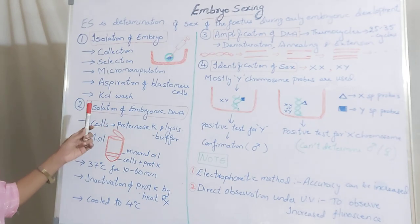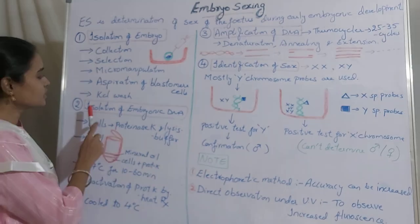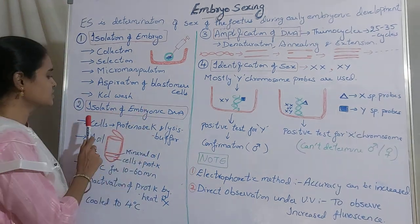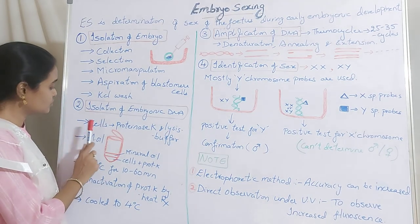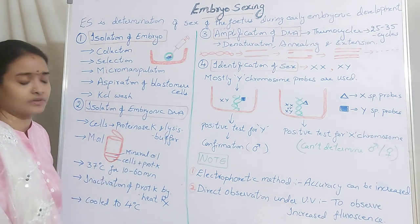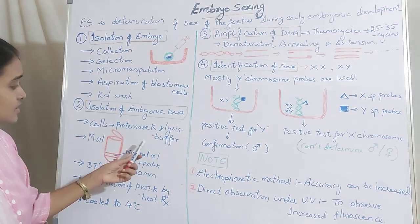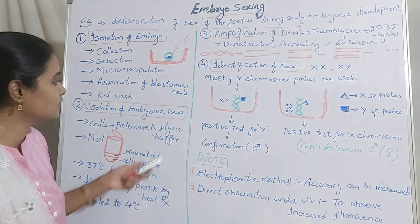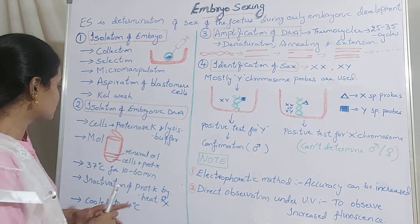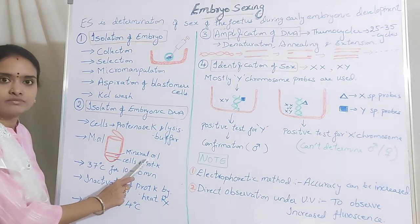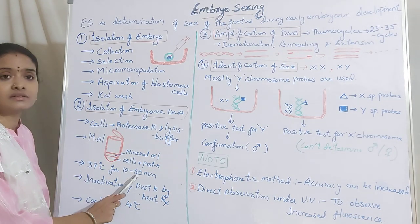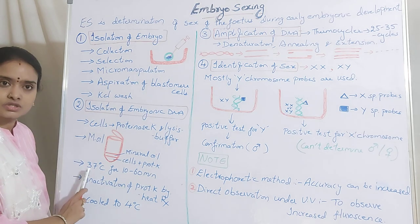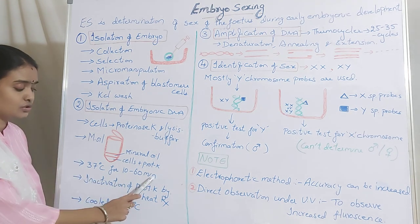Coming to the next step, isolation of embryonic DNA. Now we have the cells, and from the cells you are going to isolate the DNA. To the cells you are going to add proteinase K and lysis buffer. You add lysis buffer and proteinase K in order to lyse the cells and extract the nucleus, because we want only the DNA present in the nucleus. Layer them with mineral oil so that there will not be any evaporation during heat treatment. After layering with mineral oil, incubate at 37 degrees centigrade for 10 to 60 minutes.